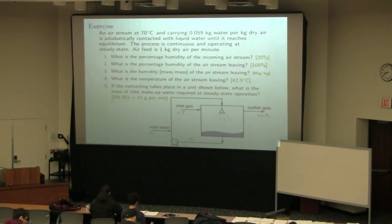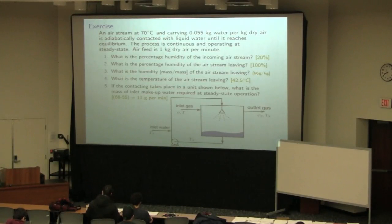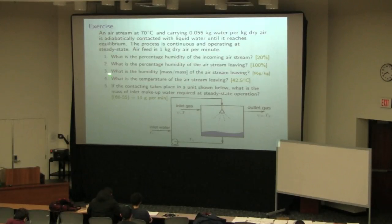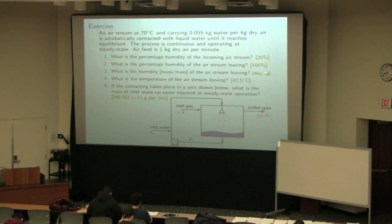We're contacting that air until we reach equilibrium saturation, so the percentage humidity leaving is 100% — that's straightforward. Moving along the adiabatic line from the 20% point at 70°C, the humidity of the leaving air corresponds to 0.066 kg/kg on the y-axis. Reading down the x-axis, the adiabatic saturation temperature is 42.5°C.